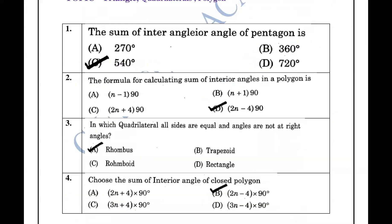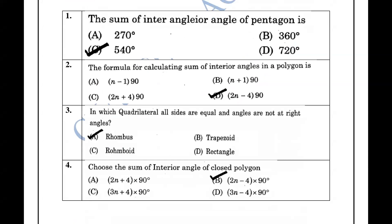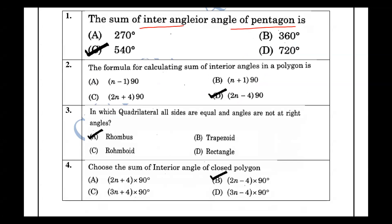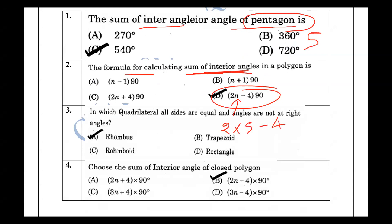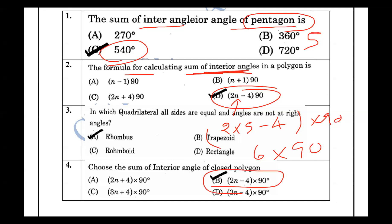Next, the sum of the interior angles of a pentagon. A pentagon means five sides. Substituting n=5 into the formula 2n minus 4 into 90 degrees gives the sum of interior angles of a polygon.